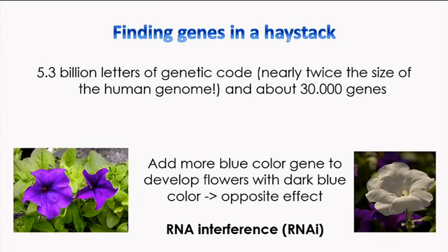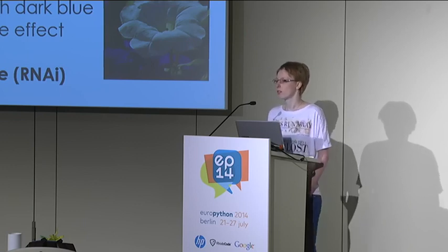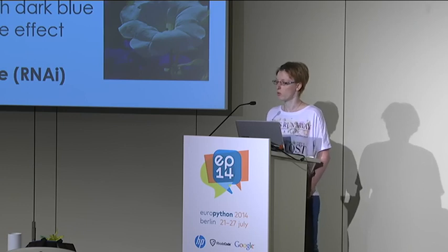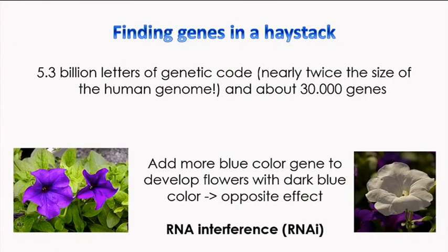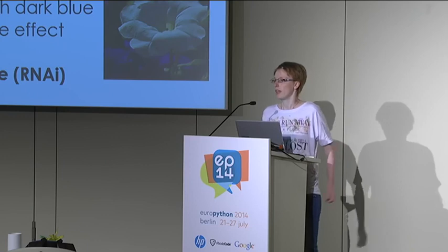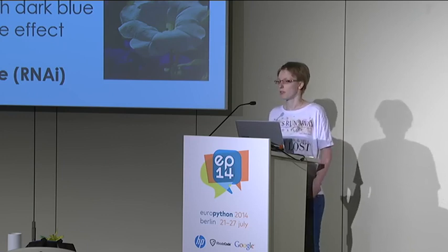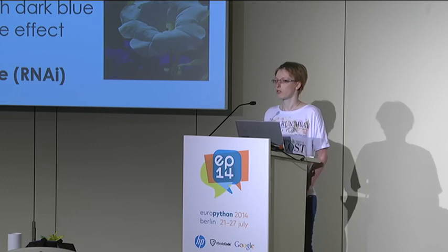We use a tool called RNA interference, which was discovered in the 90s. People wanted to make petunia plants dark blue — they knew the gene for the color and added more of it. But exactly the reverse happened: the flowers came out white or with only stripes of blue. They repeated experiments and it always turned out the same. It took quite some years to find out there's a mechanism behind this called RNAi.